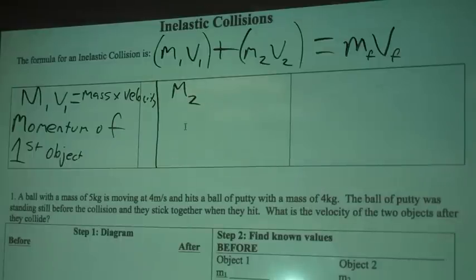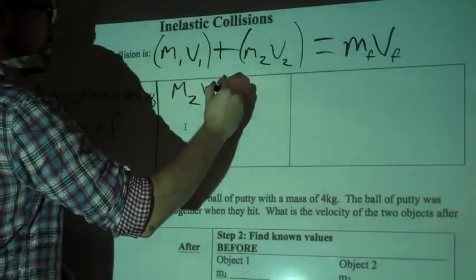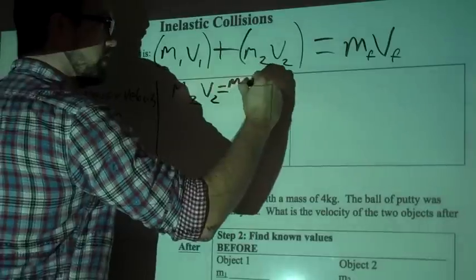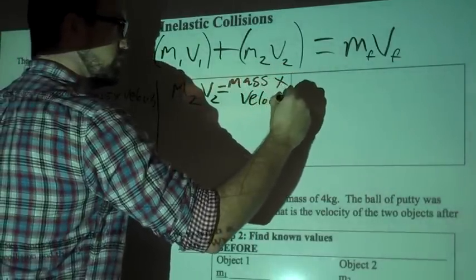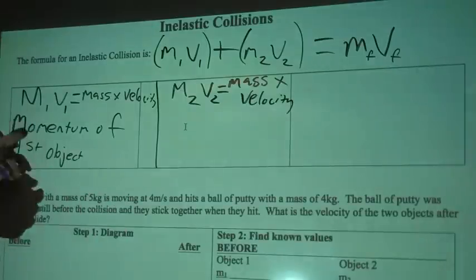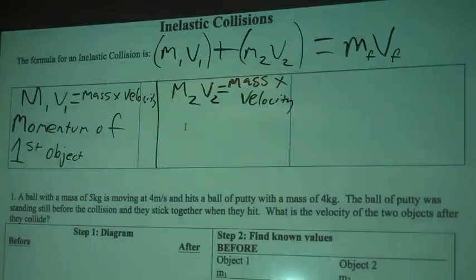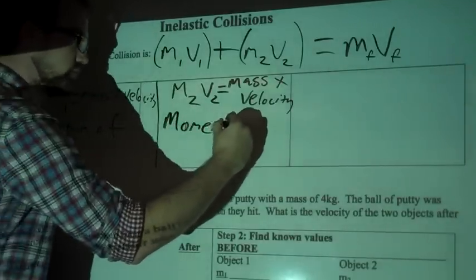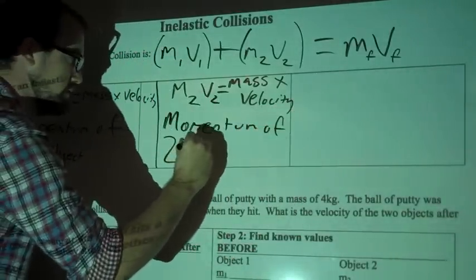So you're using the exact same equation that you used before. m2 and v2 is still equal to mass times velocity. And this is the momentum of the second object. That's why there are sub 2s down there.